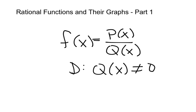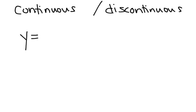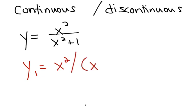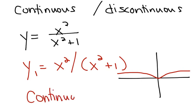Let's talk about some special types of rational functions — two specific types called continuous and discontinuous. One type is y equals x squared over x squared plus 1. If you graph this on your calculator, make sure you put the denominator in parentheses, otherwise the graphing calculator will not graph it correctly. When you graph it, you'll see a curve — this is called a continuous function because if you put your pencil on the curve and follow it, you don't have to pick your pencil up to get from one side to the other.